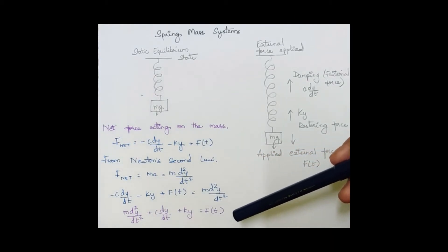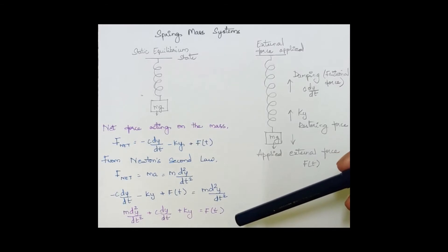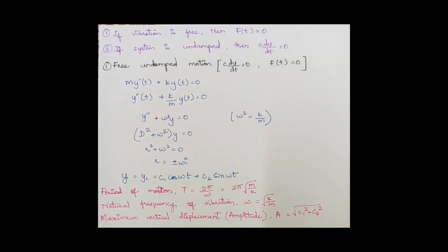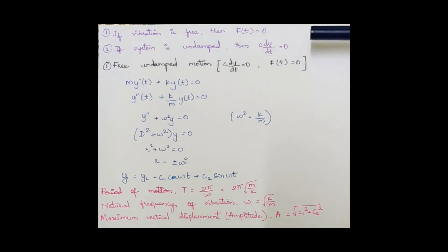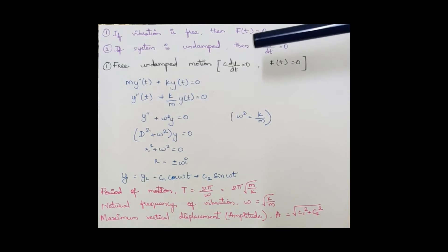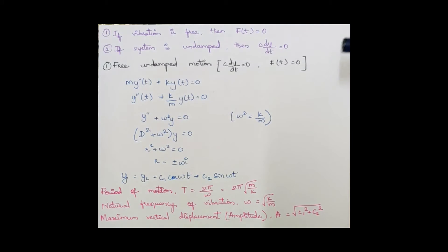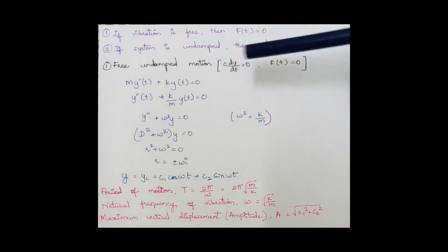If vibration is free — no external force — then f(t) = 0. If the system is undamped, then c·dy/dt = 0. There are four cases. The first case is free and undamped motion, where both c·dy/dt = 0 and f(t) = 0. Substituting into the general equation gives m·y″(t) + k·y(t) = 0.